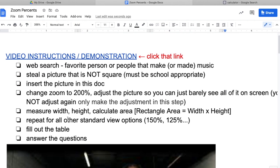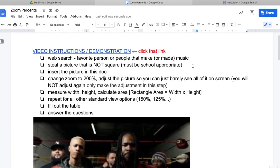Back up to the directions: you're gonna repeat this for all other standard view options - 150%, 125%. What that means is I'm gonna come back up to the zoom. I'm gonna change it from 200 down to 150.